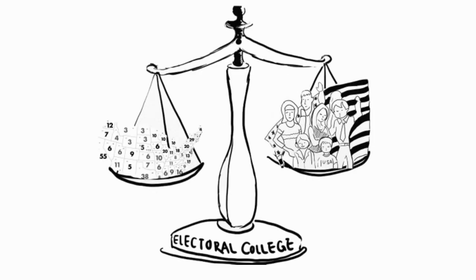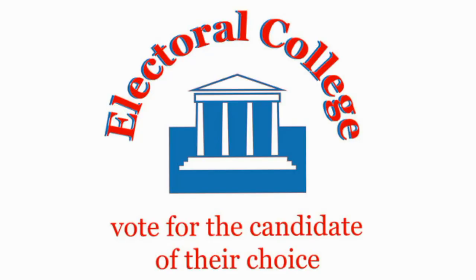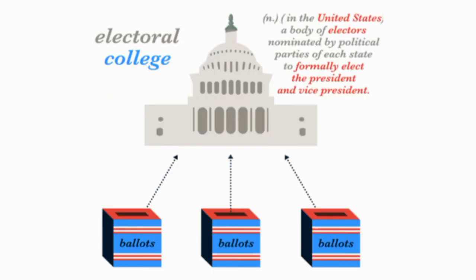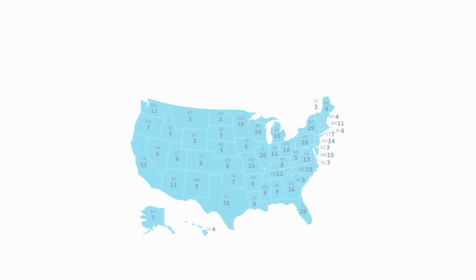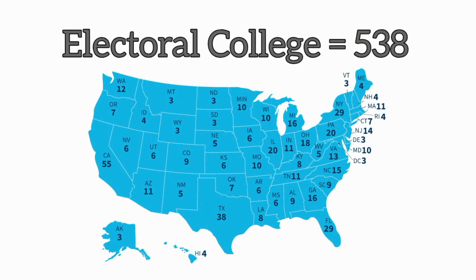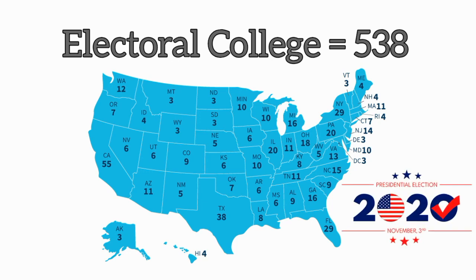Once the electors have been elected, it's almost clear who the president will be. However, the president won't be officially elected until the Electoral College casts their votes in their state. The Electoral College is the institution that elects the president and vice president of the U.S.A. It consists of 538 electors from across the country, and usually casts its votes in the November–December period of the election year.